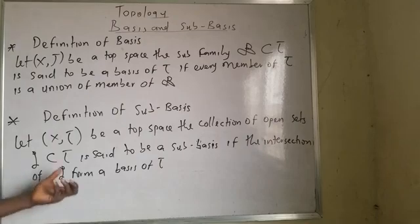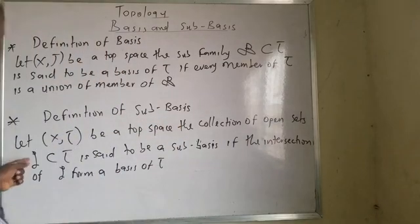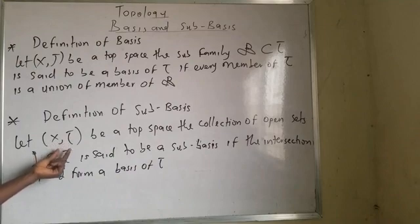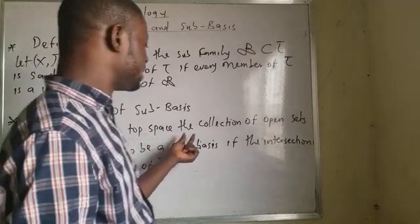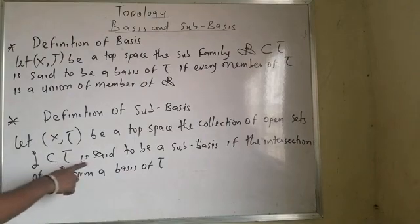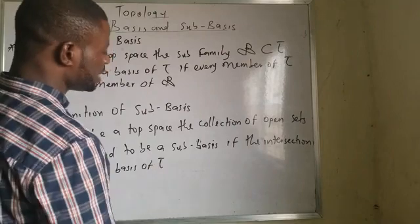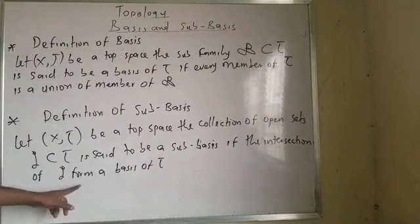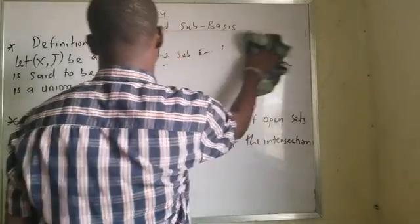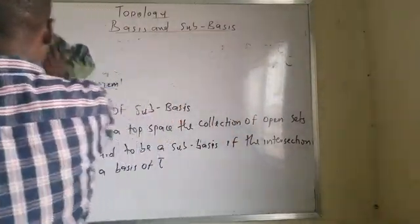Now, why sub-basis? Let (X, τ) be a topological space. The collection of open sets, which is going to be sub-basis in τ, is said to be a sub-basis if the intersection of this form a basis of τ. That's what we mean by sub-basis and basis. Now, with what I've written, I think with the example you will be able to understand this very well.